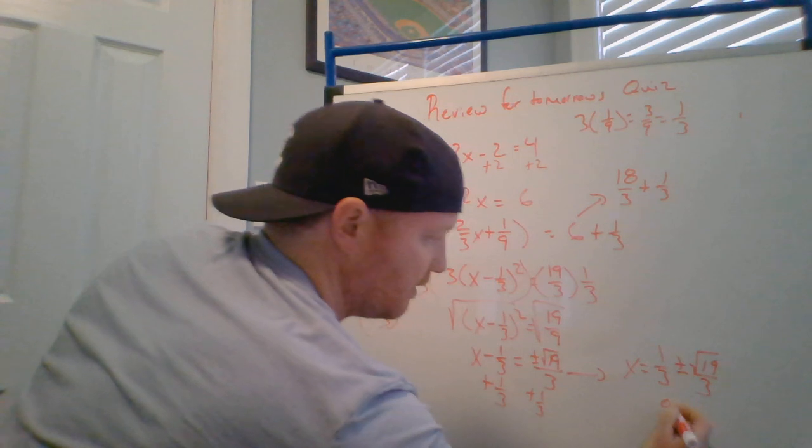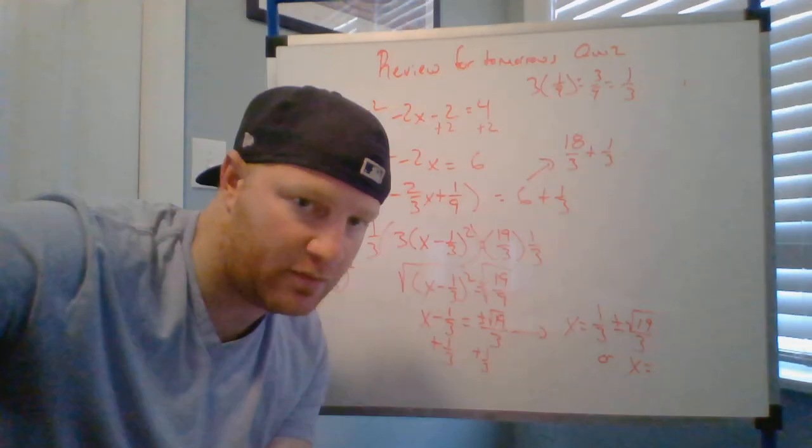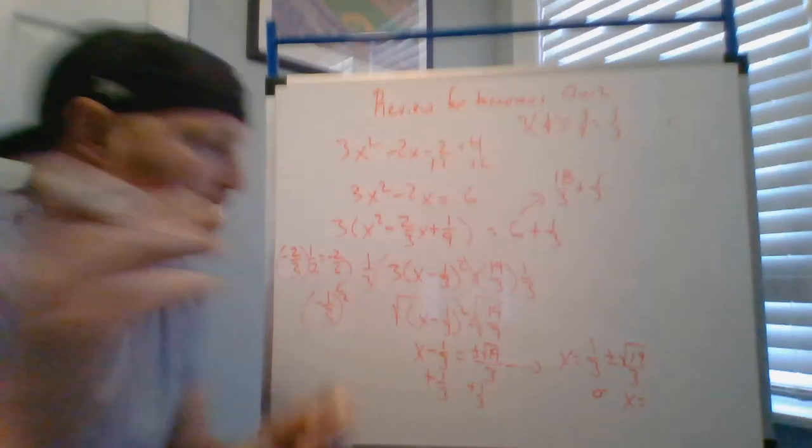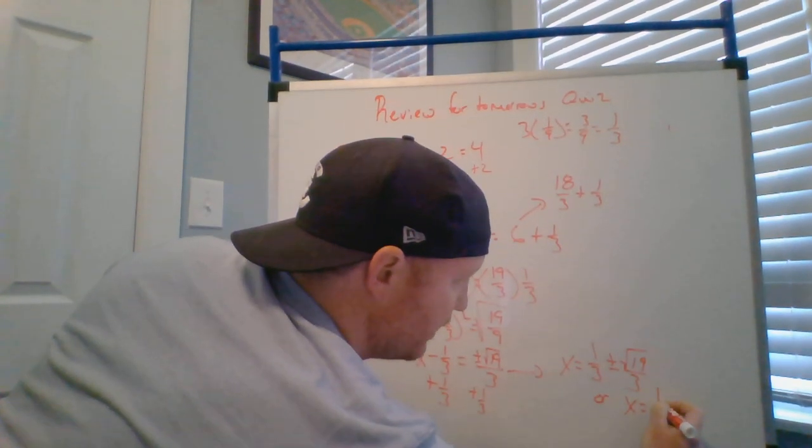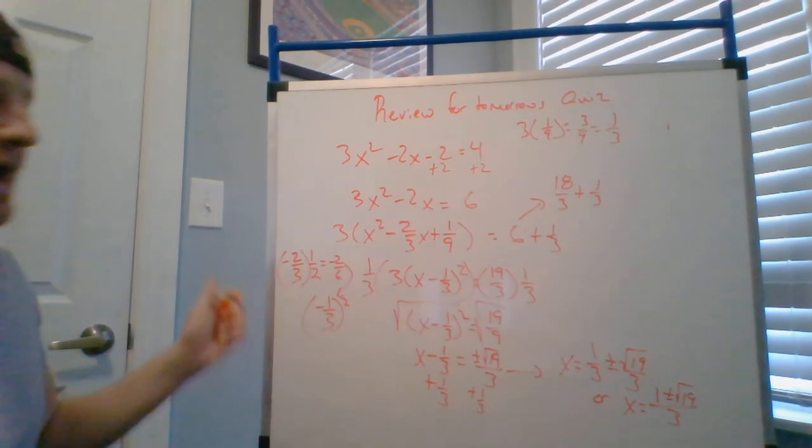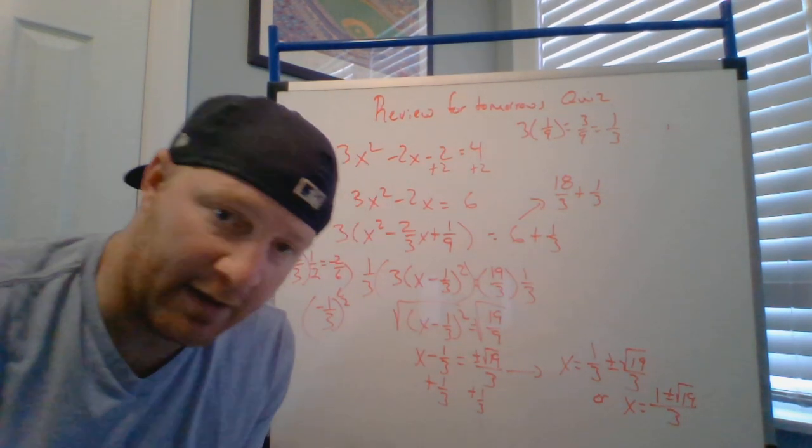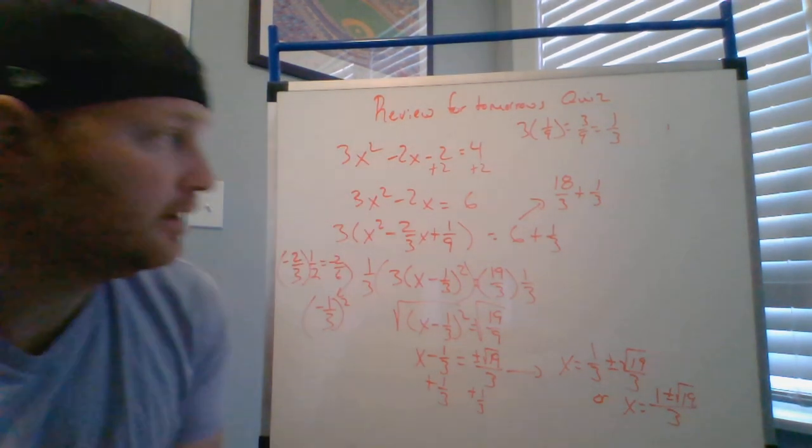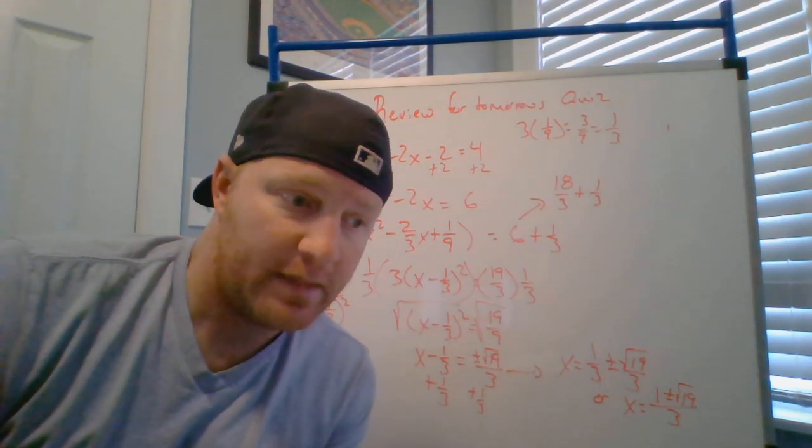Or it might read like this. X equals, or equals, x equals 1 plus or minus square root of 19, all over 3. Either answer is acceptable. I hope this helps out and solidifies what we're doing now with this completing the square stuff. Then see today's work.